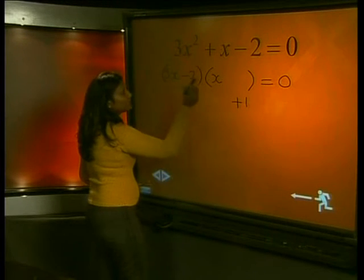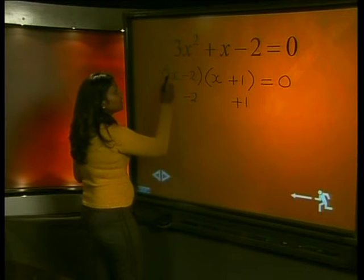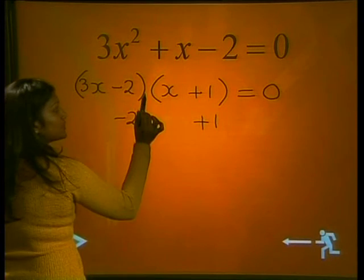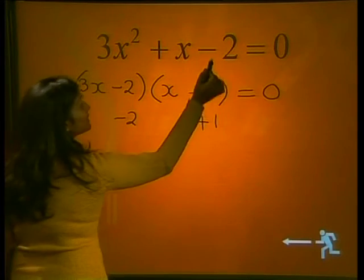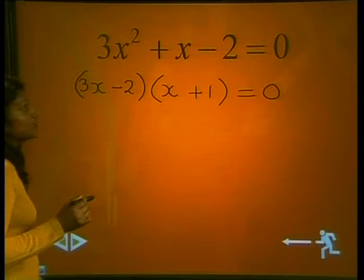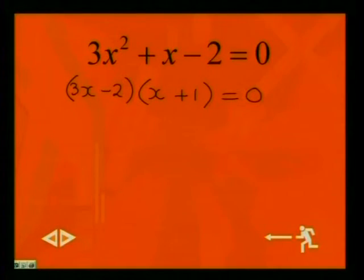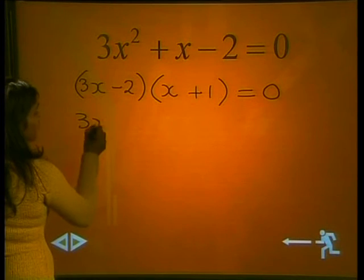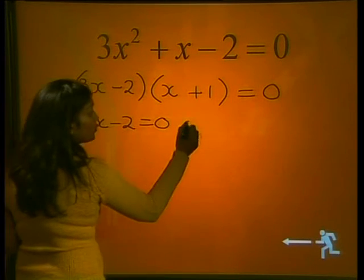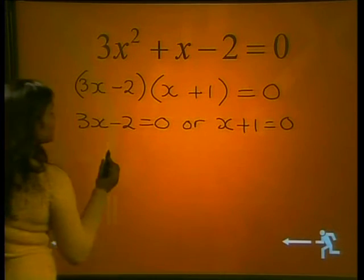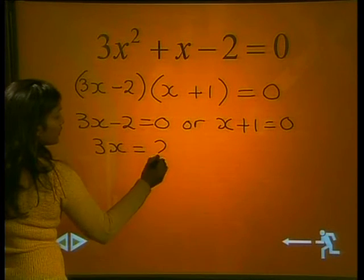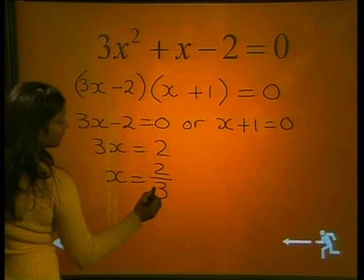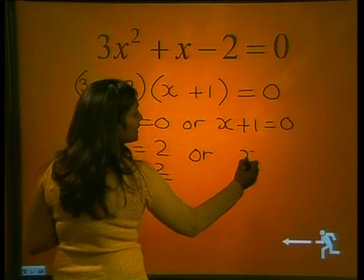So we put negative 2 and positive 1 in the brackets. Checking: 3x times x is 3x squared; 3x times positive 1 is positive 3x; adding negative 2x gives positive x — the middle term is correct. Then negative 2 times positive 1 is negative 2. So we have our factors. We can write 3x minus 2 equals 0 or x plus 1 equals 0. Solving: dividing by 3 gives x equals 2/3, or x equals negative 1.